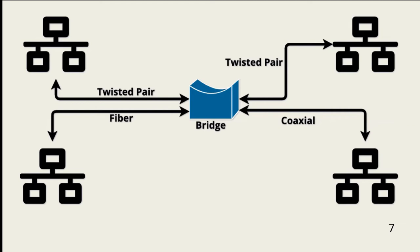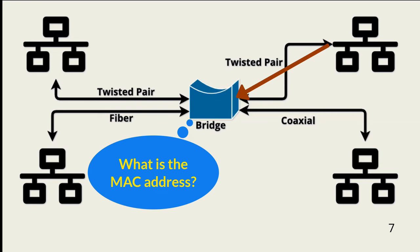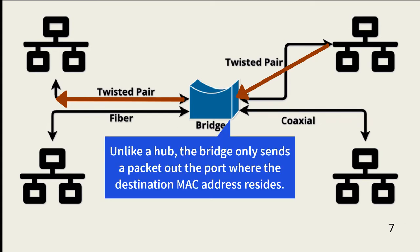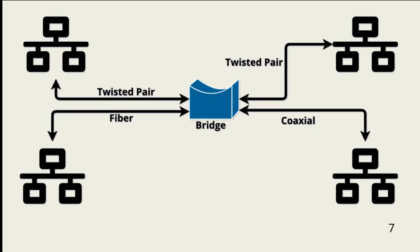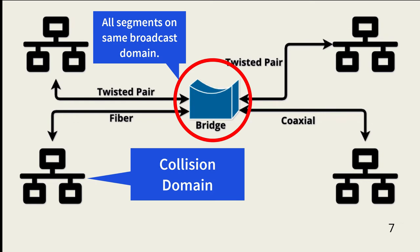Now we move to OSI layer 2, the data link layer. The most common devices operating at this layer are the bridge and the switch. A bridge forwards traffic from one network to another by looking at the destination MAC address contained in each packet. Because the bridge keeps a log of the ports out which each MAC address is located, it knows which port to use to forward a packet. Bridges also enable connecting networks that use different network topologies, cable types, and speeds, maintaining the same or very near the same speeds as the connected networks. Each network connected to the bridge is a separate collision domain; however, all connected networks are part of the same broadcast domain.